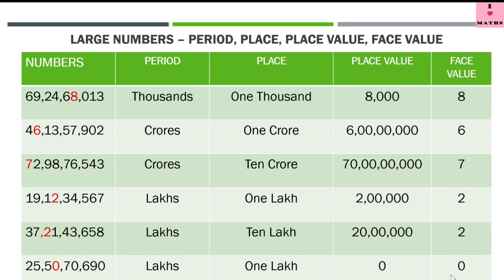So children, this was all about period, place, place value, and face value. I hope these concepts have become clear now. One thing I want to tell you — a favorite question with examiners is: name the digit whose place value as well as face value always remains the same. So children, which digit will that be?